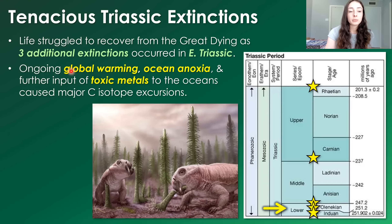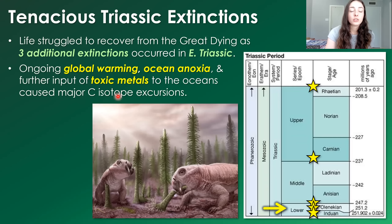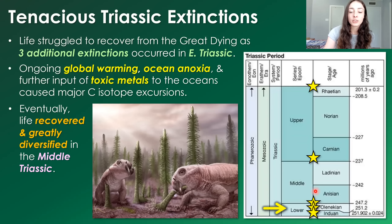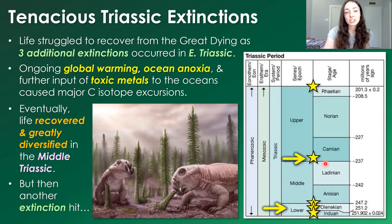The early Triassic events were likely caused by ongoing warming, ocean anoxia, and further input of toxic metals after the end-Permian volcanism, causing major carbon isotope excursions — which help track the timing of events and correlate chemical trends with biosphere changes. Eventually, after these three extinction events, life got through this horrible period and recovered and diversified in the Middle Triassic — but then another extinction event hit.